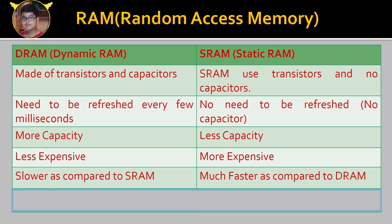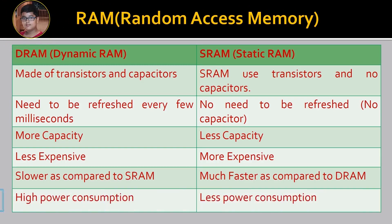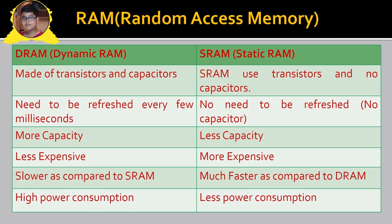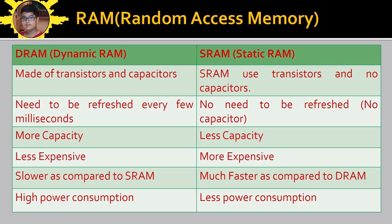Why is DRAM very slow? It is because it needs refreshing of capacitors, and that takes a lot of time. There is high power consumption in dynamic RAM whereas there is very less power consumption in SRAM. Because of the capacitors used in DRAM, the need for refreshing after every few milliseconds consumes power and generates heat, resulting in high power consumption.